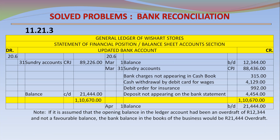General Ledger of Fish Art Stores, Statement of Financial Position, balance sheet account section — updated bank account. If it is assumed that the opening balance in the ledger account has been an overdraft of 12,344, then the account will appear as follows. Debit side: March 31, sundry accounts CRJ 89,226.